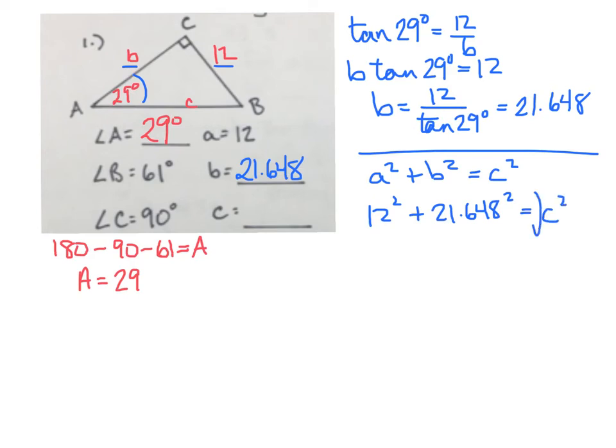In order to finish it up, I'll just take the square root of both sides. That'll give me something that I can just type into my calculator all at once, typing in the square root of 12² plus 21.648².